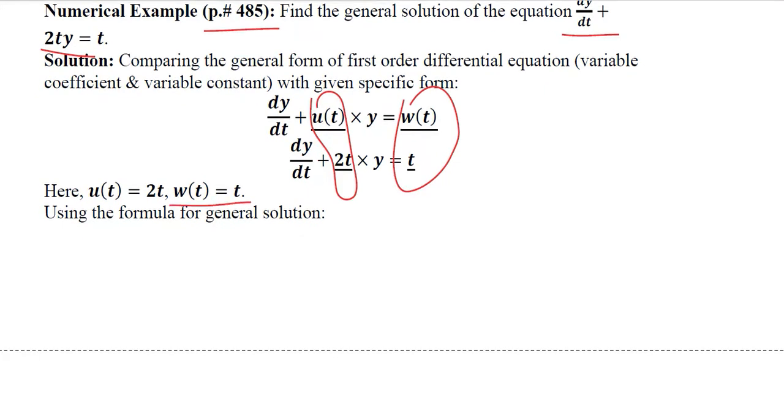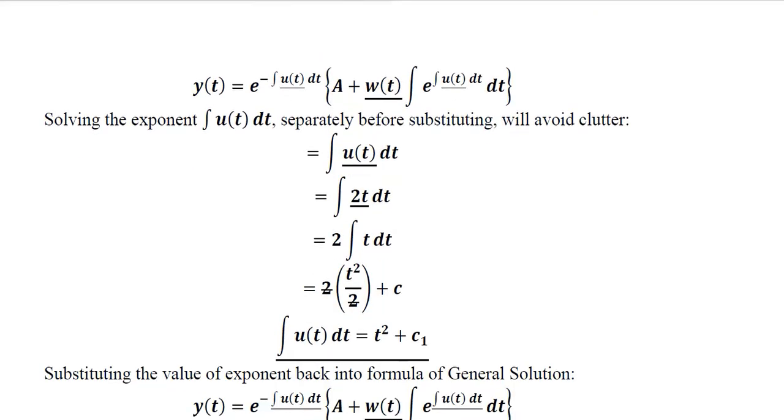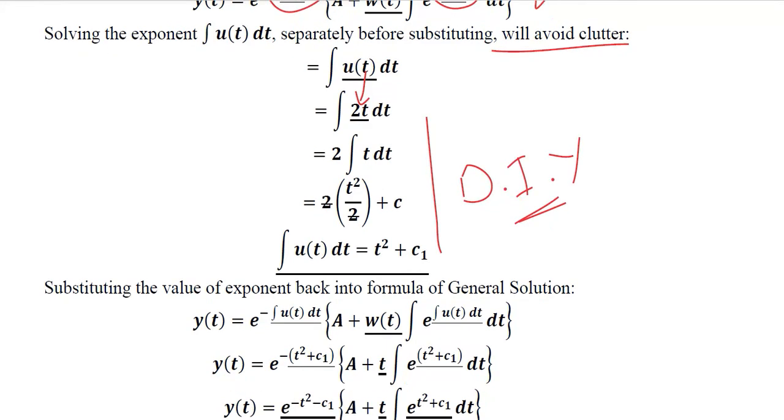The value of WT is T and the value of UT is 2T that we have extracted. And now we are going to put these values here. This is the formula that we just introduced. And now we are going to substitute the values in it. Since the integral exists in the exponent, it might get a little cluttered. So in order to avoid this clutter, we are going to put the values. That is the value of UT. And simplification can be easily done. So it is a DIY for you, this integration and simplification procedure.